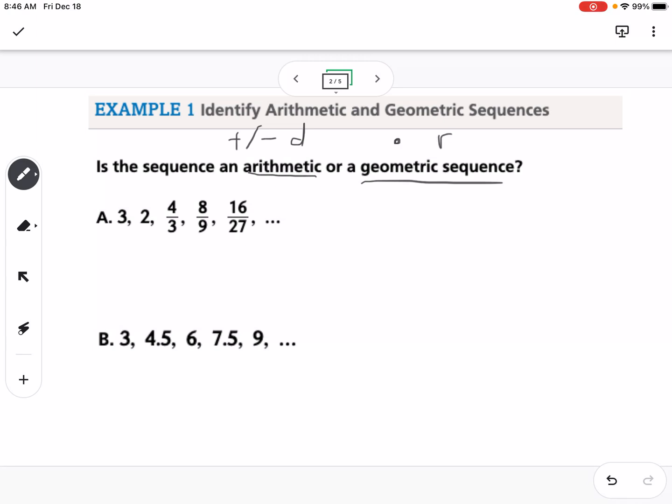We're looking for: are we adding and subtracting the same amount each time, or are we multiplying by the same amount each time? If we look at this, to go from 3 to 2, that's minus 1, but to go from 2 to 4 thirds, that's not minus 1. So we can say, not arithmetic.